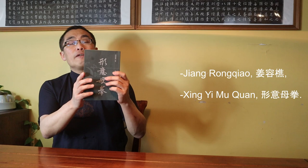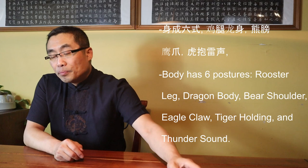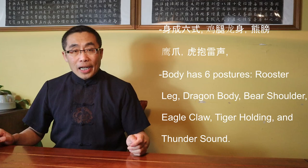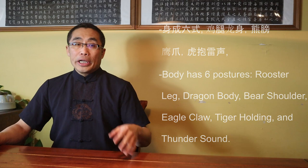Internal style practice requires a conceptualization process — a process that extracts the essence of an animal's movement and then internalizes and integrates it with practice. That's the only correct approach. Therefore, having a deep understanding of Si Xiang will greatly help a practitioner make progress and should not be neglected. Jiang Rongqiao's book, Xing Yi Mu Quan or Xing Yi Five Elements, on page 8 says: Shen Cheng Liu Shi, Ji Tai Long Shen, Xiong Bang Ying Jua, Hu Bao Lei Yin — translation: practice has six postures: Rooster Leg, Dragon Body, Bear Shoulder, Eagle Claw, Tiger Holding, and Thunder Sound. He used six harmonies and six postures to express these six practices, different from Sun Lu Tang's Si Xiang approach.